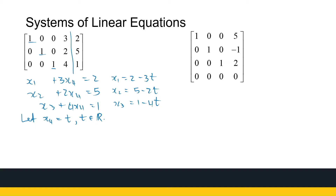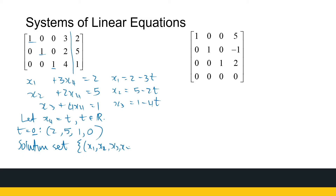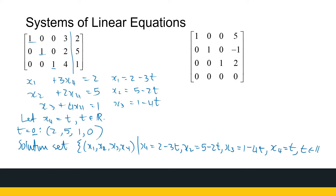If you pick T equal to 0, you can find a particular solution: X1 is 2, X2 is 5, X3 is 1, and X4 is 0. You can choose T to be any value to generate a particular solution. But your general solution set is the set of all possible solutions — X1 equals 2 minus 3T, X2 equals 5 minus 2T, X3 equals 1 minus 4T, and X4 equals T, where T is some real number. This is the solution set for the infinite number of solutions of this system.